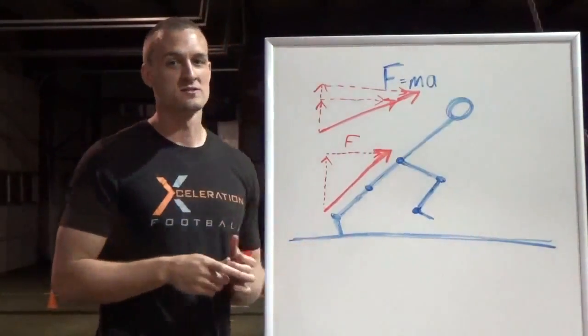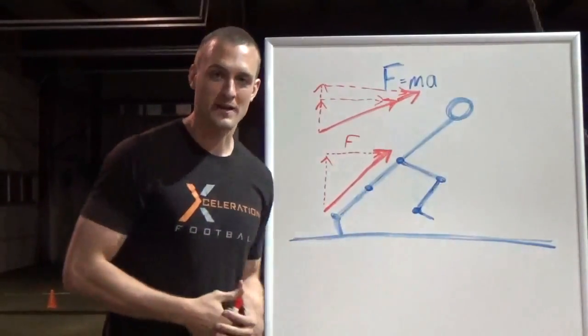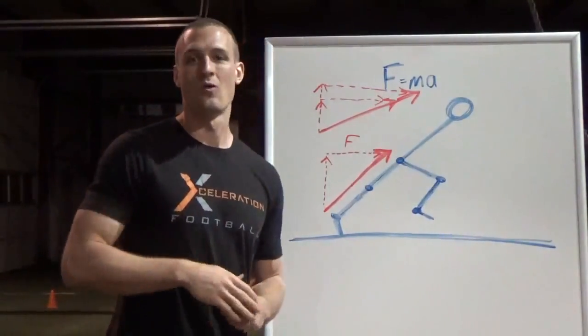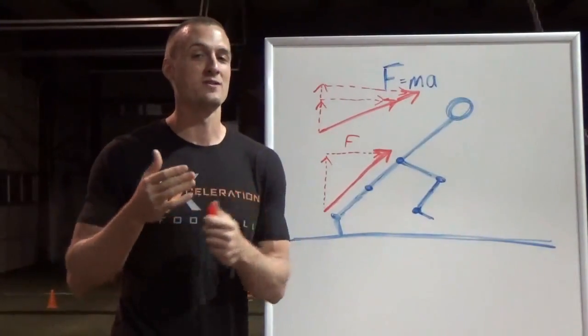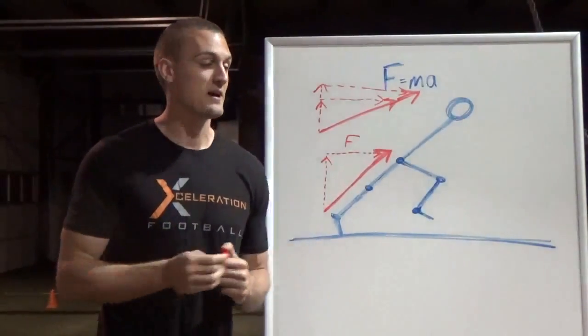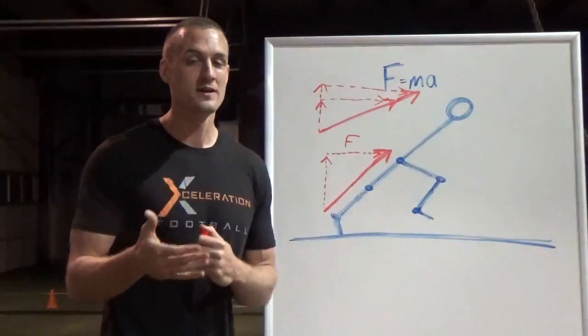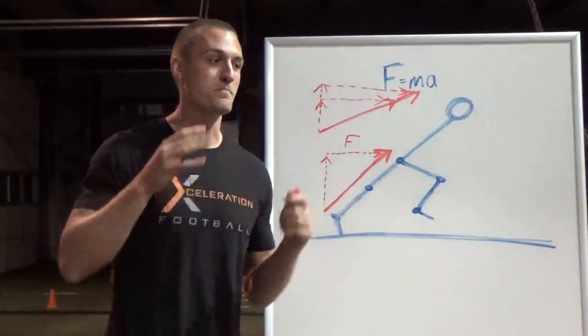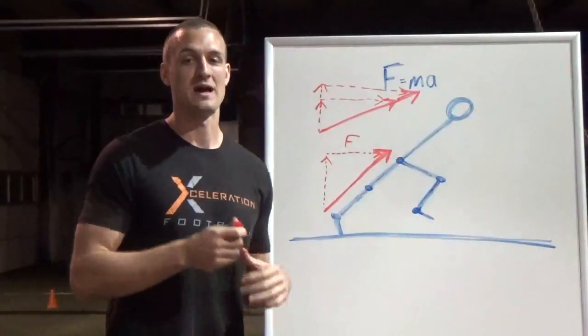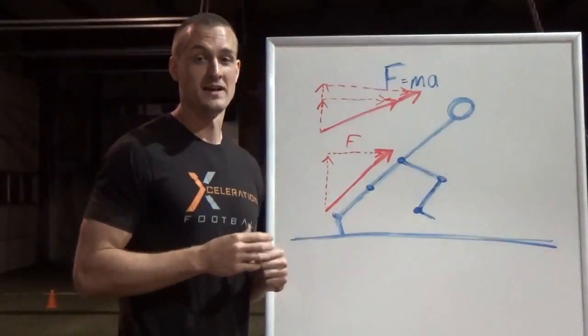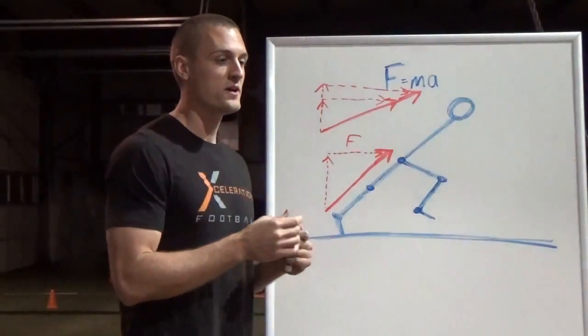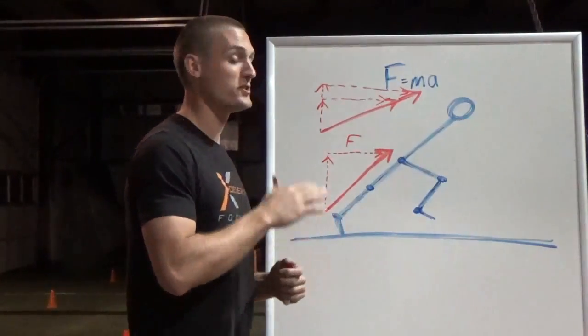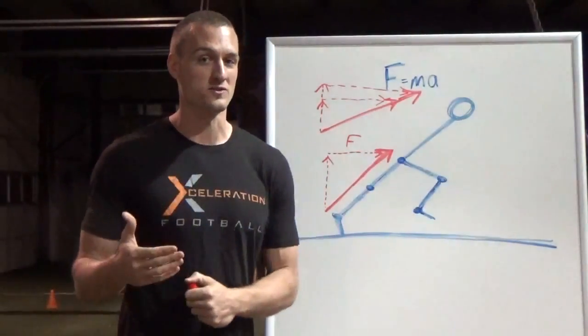So what you can't do is go look at Asafa Powell coming out of the blocks and say, oh, he's got such and such angle and say, oh, well, I'm going to do that. No, you're not Asafa Powell. You don't have the force production to do that. Now, should you try to come out at a low angle? Yes, absolutely, but you can't expect yourself to just match an elite sprinter unless you have elite sprinter force. So this is another example where your technique or a particular component of your technique, your angle, is a product of your force.